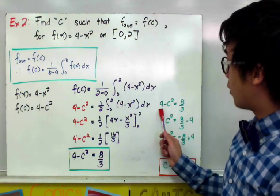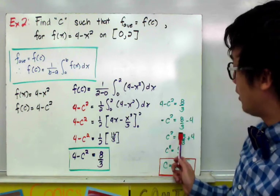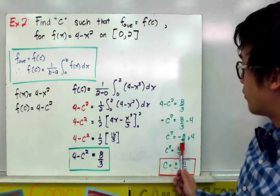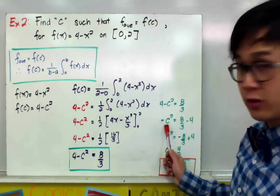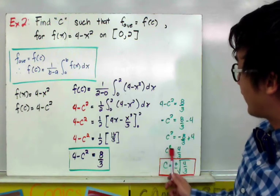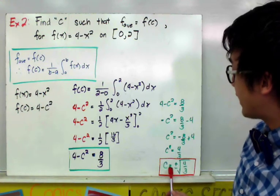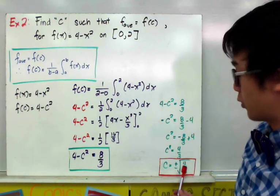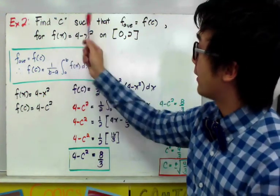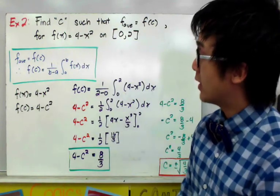By getting rid of 4, we'll have negative c squared equal to 8 over 3 minus 4. And it gives us c squared equal to negative 8 over 3 plus 4, by getting rid of the negative sign with the variable c. To finally get the exponent, take the square root of both sides and you'll have c equal to plus or minus the square root of 4 over 3. This is how we find the constant c given this type of equation in this particular formula.